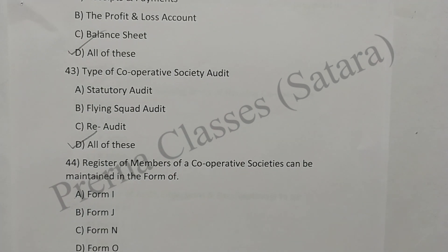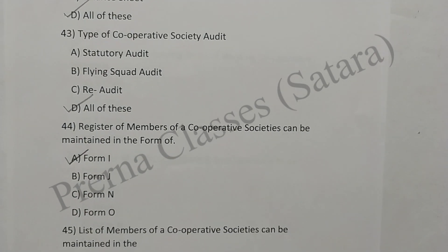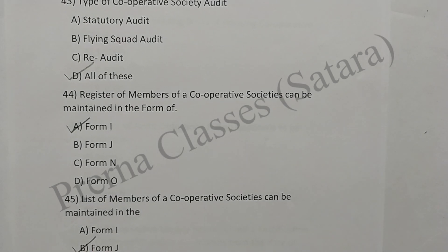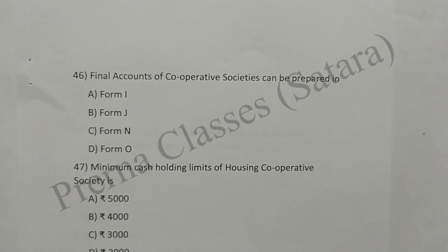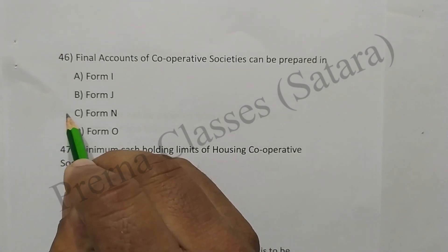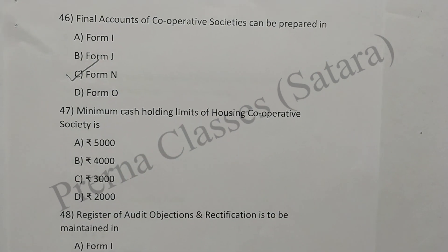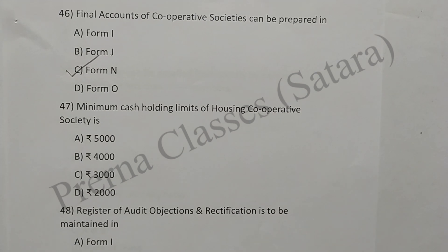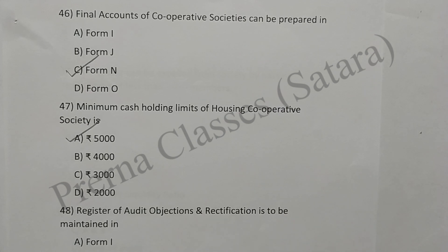Question 44: Register of members of cooperative societies can be maintained in Form I. Option A is correct. Question 45: List of members of a cooperative society can be maintained in Form J. Option B is correct. Question 46: Final accounts of a cooperative society can be prepared in Form N. Option C is correct. Question 47: Minimum cash holding limit of a housing cooperative society is Rs. 5,000. Option A is correct.